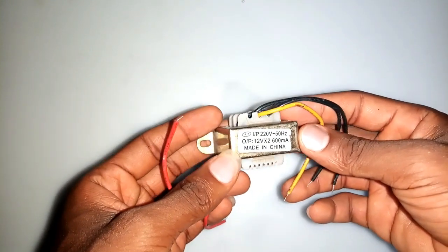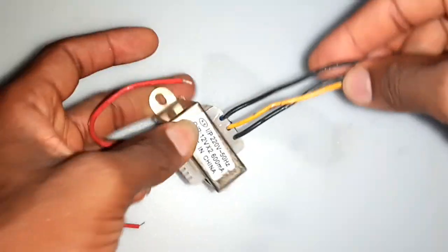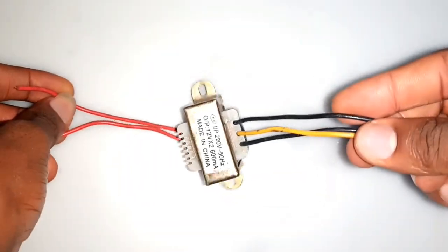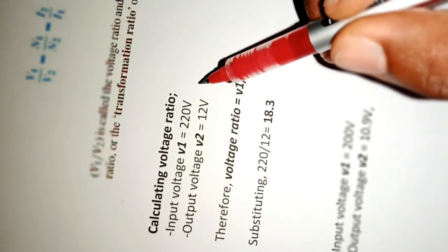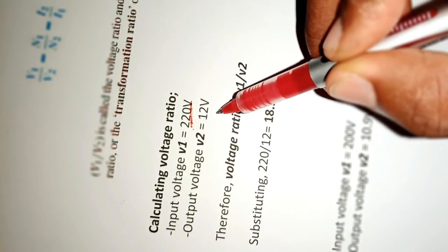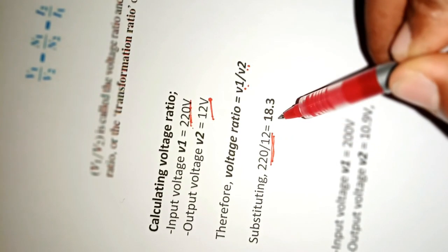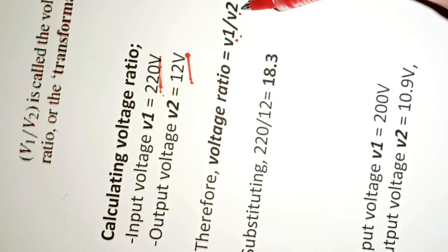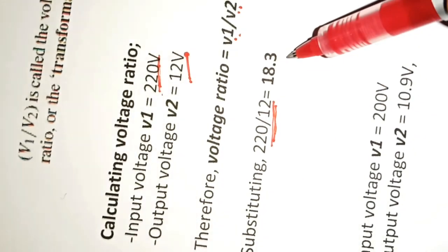This is the transformer that I use for the project and from the description, I have its primary turn rated 220 volts AC and the output voltage rated 12 volts AC. So if I calculate the voltage ratio, I will have 220 volts divided by 12 volts which will equal to 18.3.